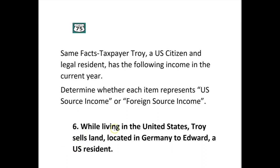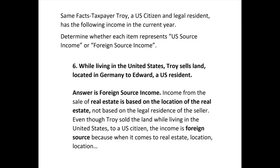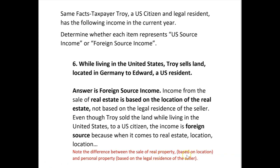Number six: while living in the US, Troy sells land located in Germany to Edward, a US resident. The big difference here is what's being sold — real estate, real property, not personal property. With personal property, sourcing was based on the legal residence of the seller. But with real estate, income from the sale is based on the location of the real estate, not the legal residence of the seller. So even though Troy sold the land while living in the US to a US citizen, the income is foreign source because the land is in Germany.